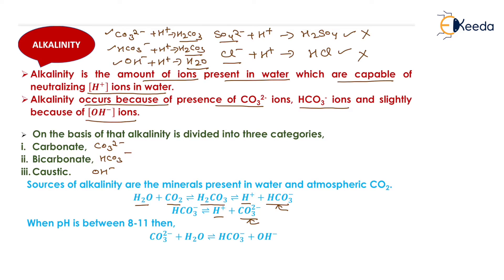When carbonate alkalinity is present in water at a high pH range of 8 to 11, the carbonate reacts with water to form HCO₃⁻ and OH⁻. The algae present in the water completely consume the HCO₃⁻, taking all the carbon, so only OH⁻ remains in the water. At this high pH range, only caustic (OH⁻) alkalinity is present because HCO₃⁻ has been completely consumed by algae.